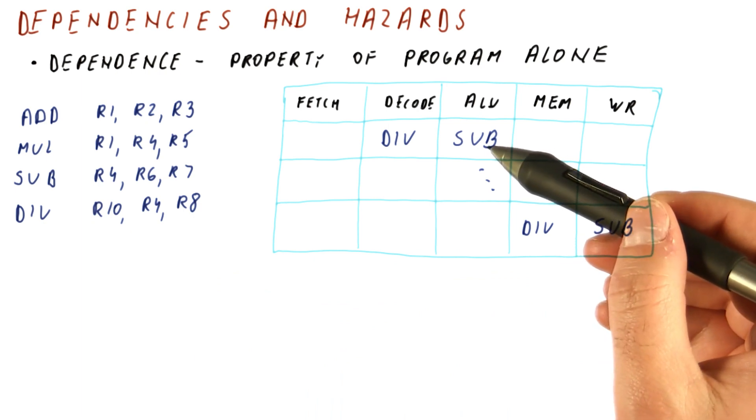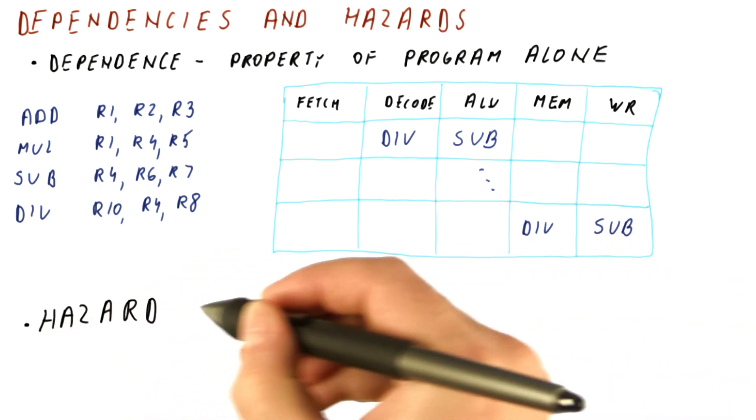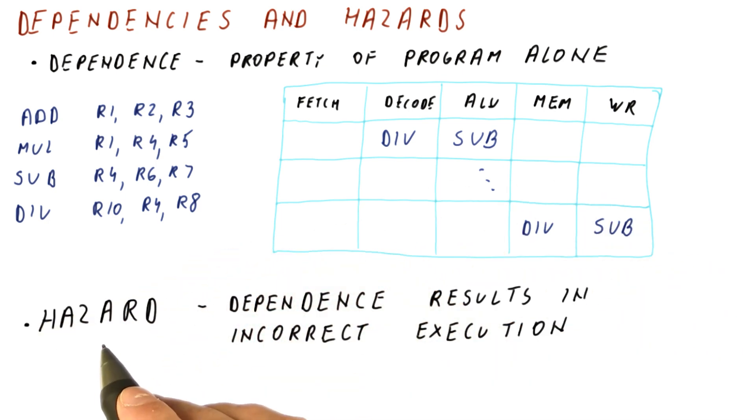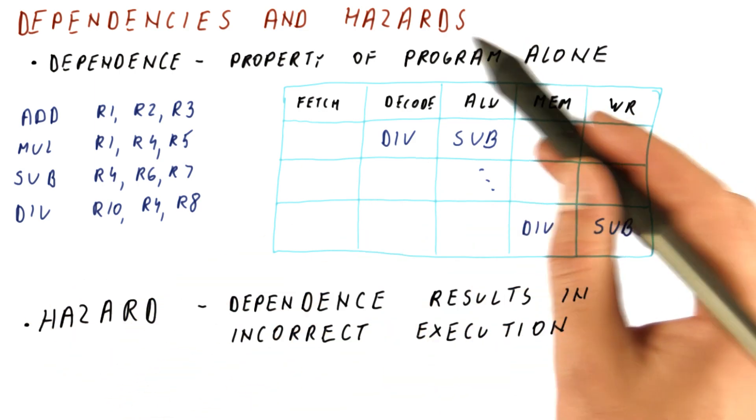The situation when a dependence can cause a problem in a pipeline is called a hazard. So a hazard occurs when a dependence results in incorrect execution of one or more instructions.